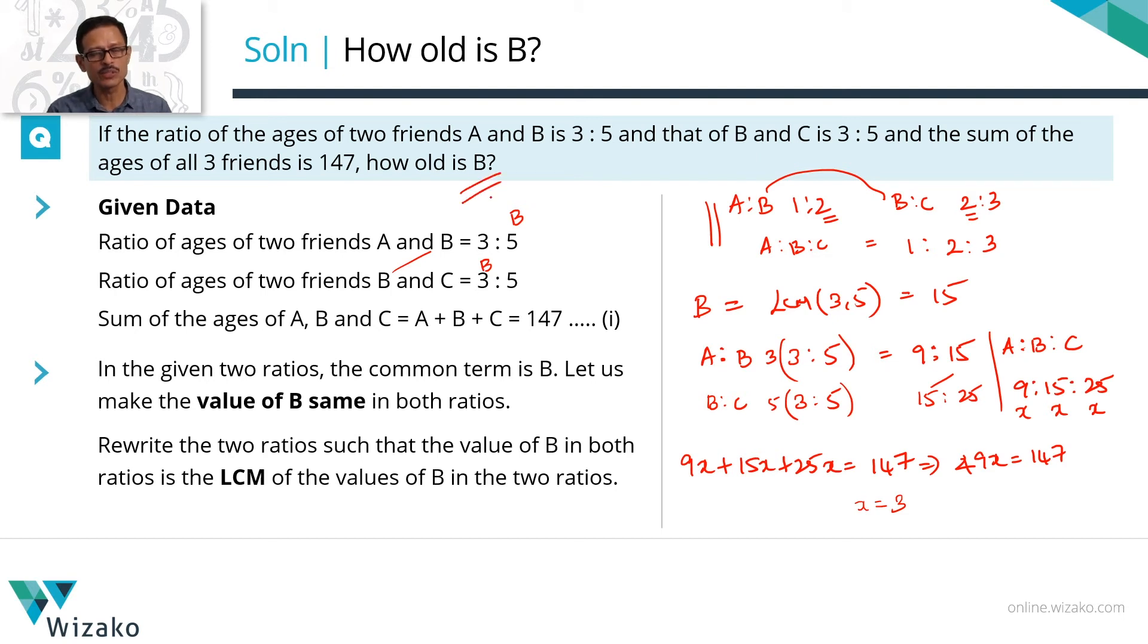What do we have to find out? We need to find out the age of B. What is the age of B? Age of B is equal to 15x. So B's age which is equal to 15x will be 15 times 3 because we found the factor x equal to 3. So this is equal to 45 years.